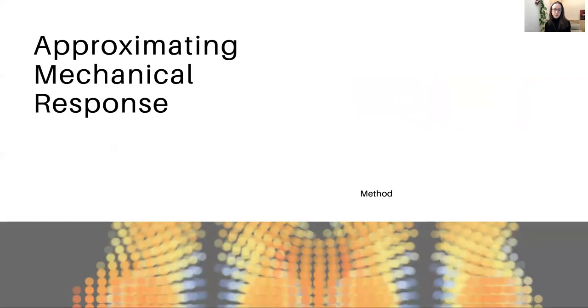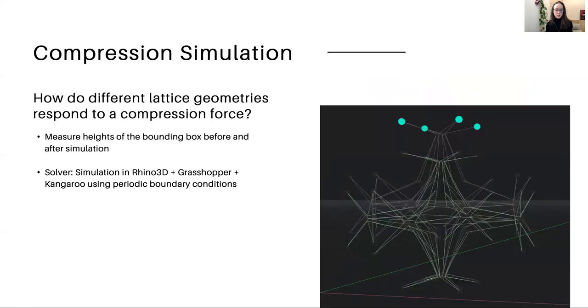The next step was to approximate the mechanical response, to do some simulation. We did our compression simulation, which is essentially asking the question, how do different lattice geometries respond to a compressive force? We did our compression simulation within Rhino Grasshopper using the Kangaroo plugin, and this was nice because it gave us periodic boundary conditions, which meant we could emulate the homogenous material property of the lattice. However, it's also a fairly lightweight simulation, and we were mostly interested in getting some data that we could use as a kind of black box to test our hypothesis that graph neural networks were an appropriate tool for this task. Future work might include replacing this with a much higher fidelity simulation.